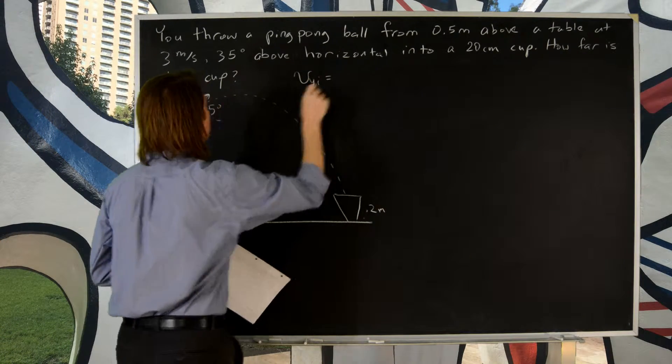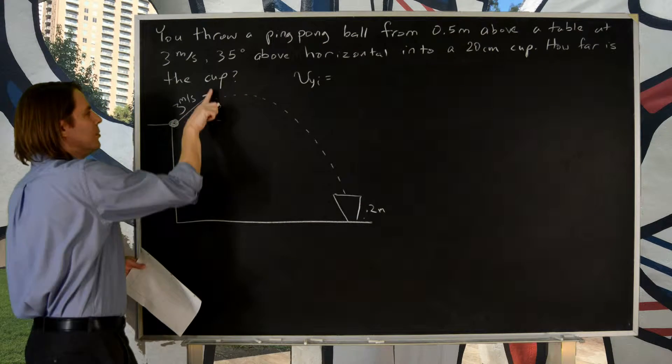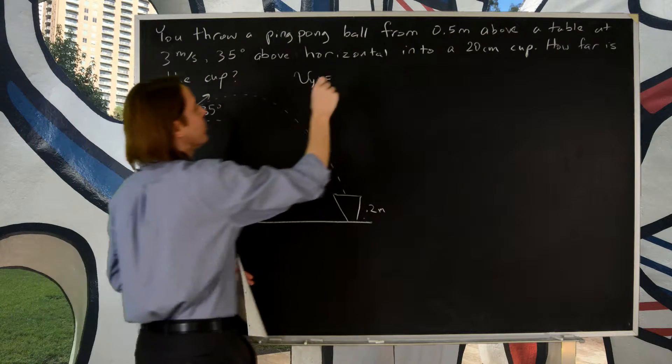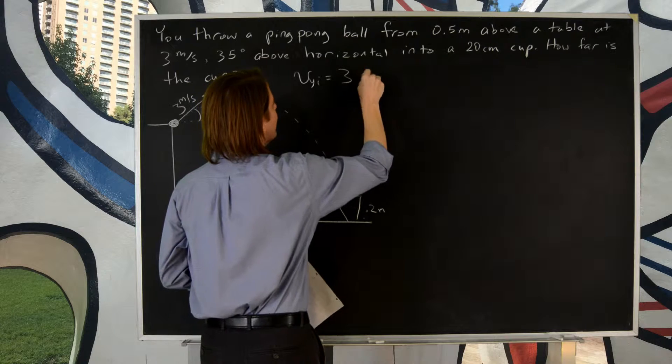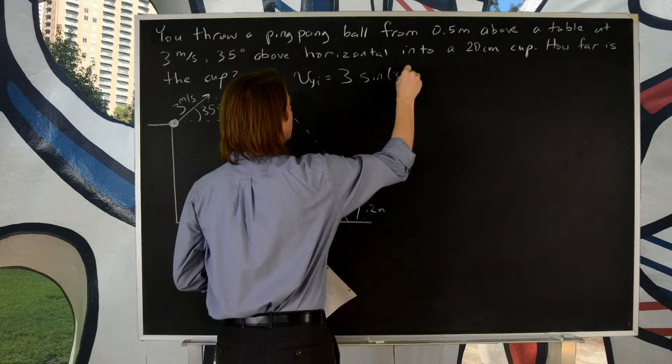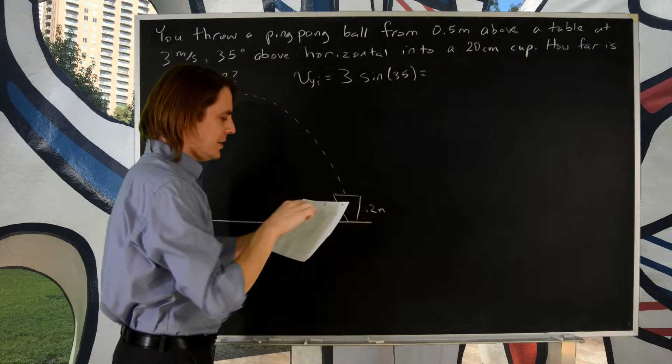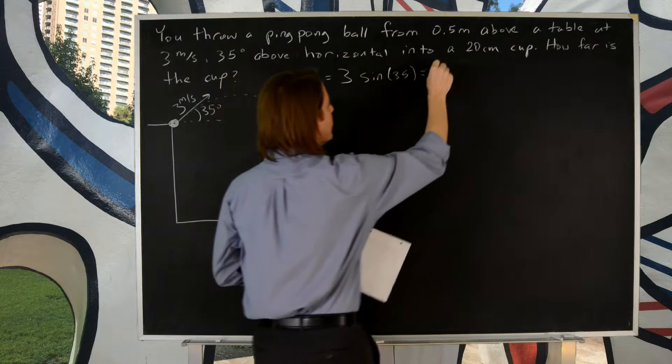Vy initial is, there's the sine. It's this component. So it's the opposite. So it's 3 meters per second times the sine of 35. So that I get is, for the sine, 1.72 meters per second.